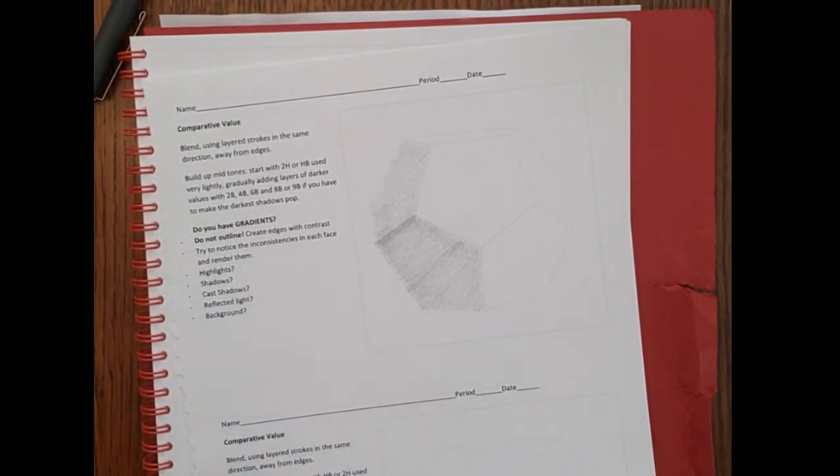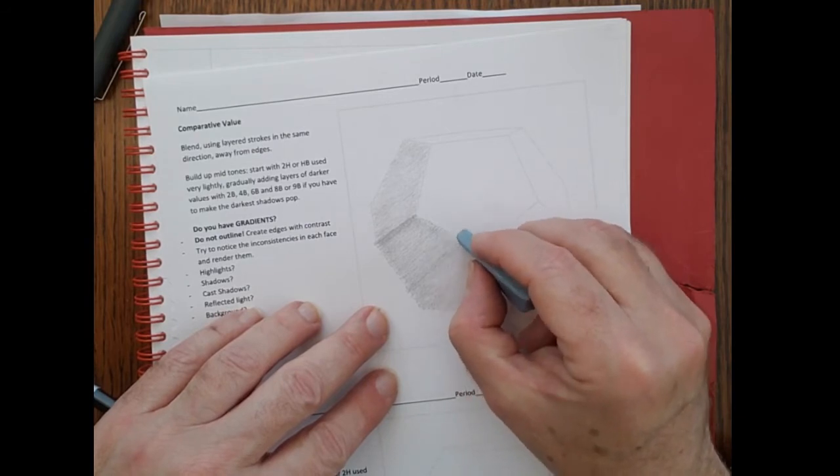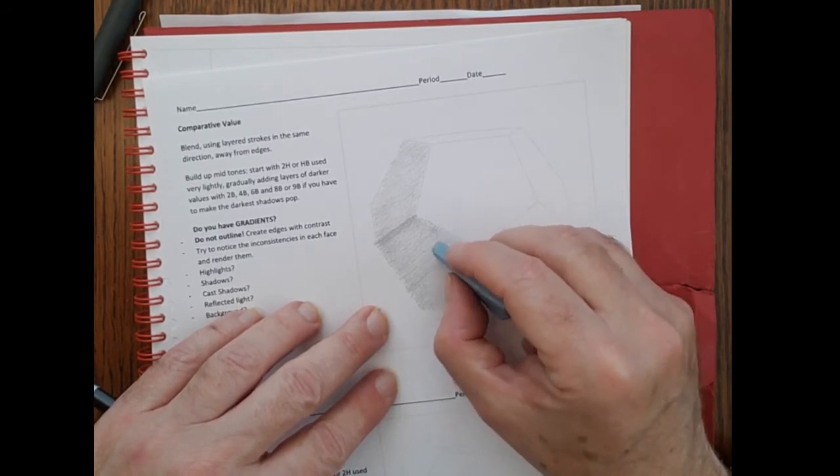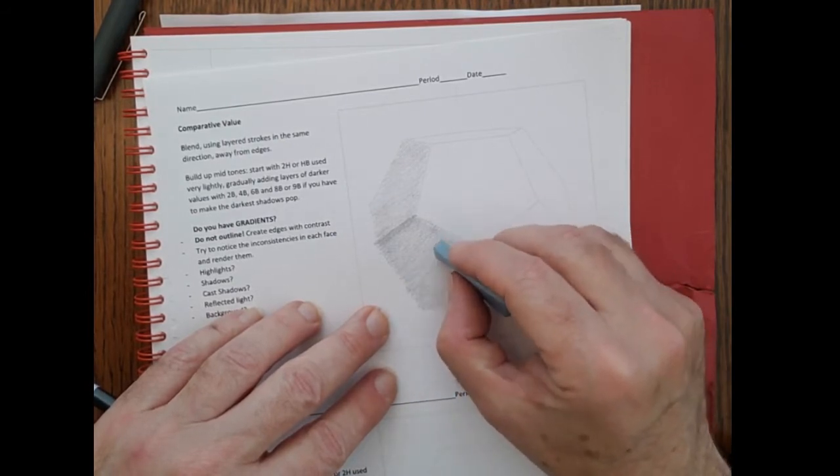So I'll show you if you have one of these little gray kneaded erasers, these are great drawing tools. If you just rub super gently with this, you don't want to rub hard because it'll change the paper if you rub hard. But if you rub super gently with this, you can lighten things up with it.